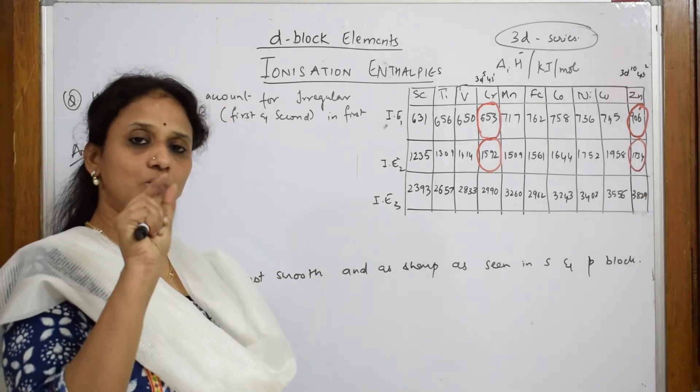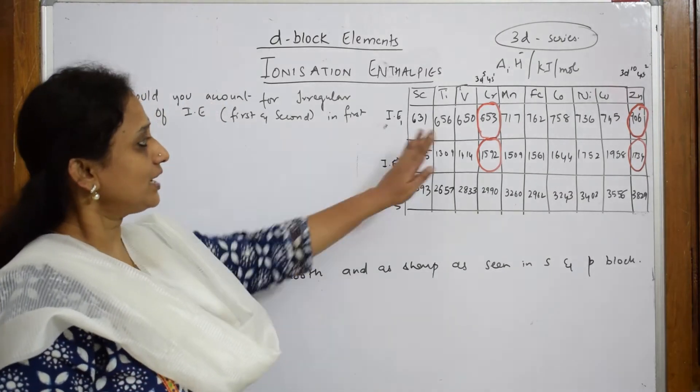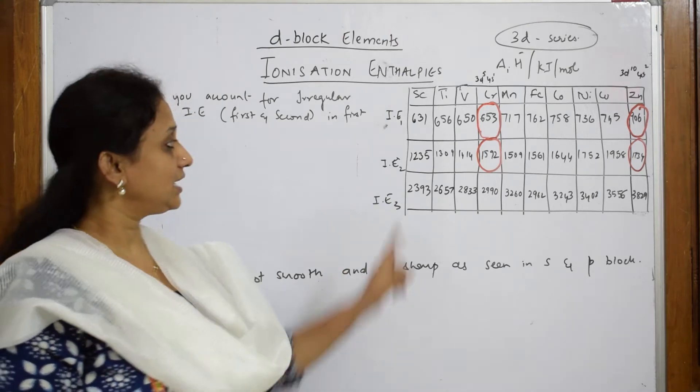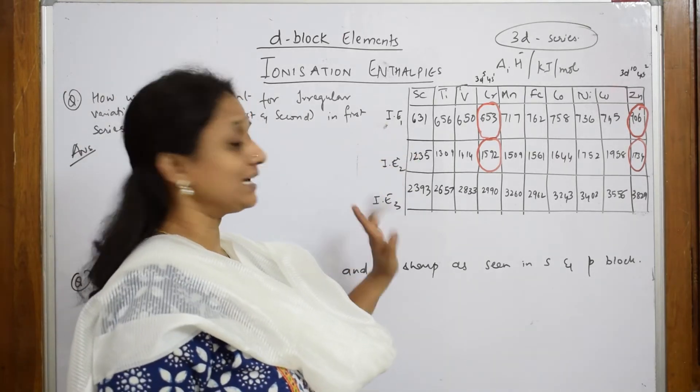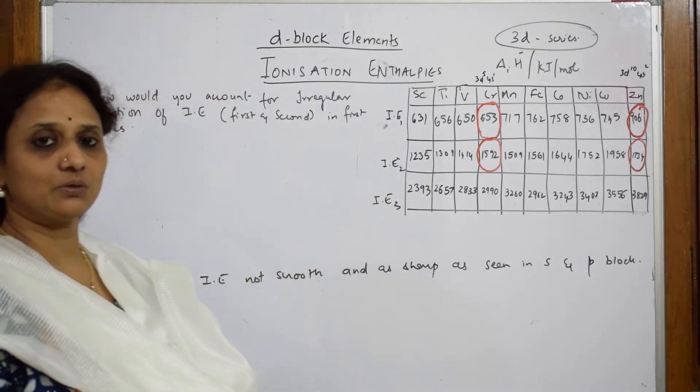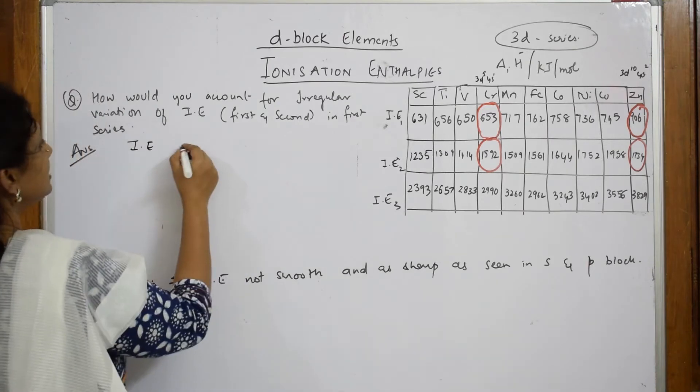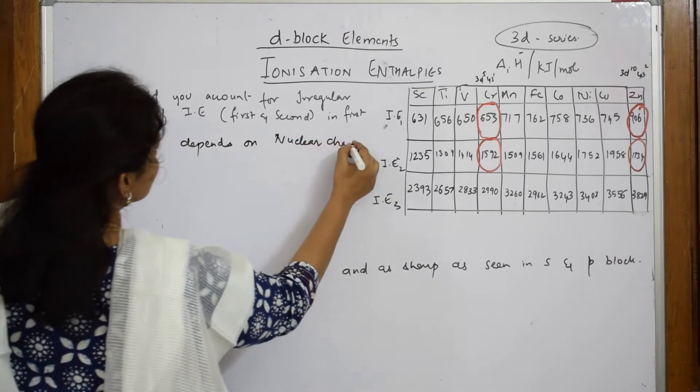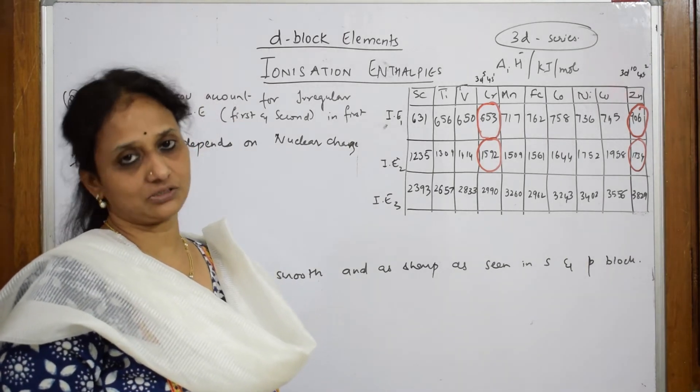How would you account for the regular variation of ionization enthalpy in the first series? Now, if this is an atom, the outermost electron, I have to supply energy and pull out that electron. You have to first write: ionization enthalpy depends on nuclear charge. This is the most important concept. Higher the nuclear charge, more is ionization enthalpy. I have to supply extra energy to pull out that electron.